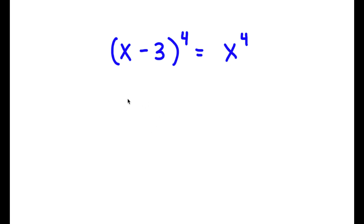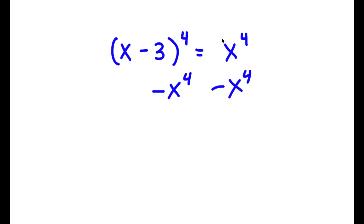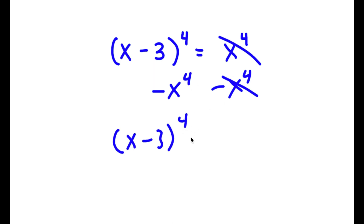In this problem, I have (x minus 3) to the power of 4 is equal to x to the power of 4. The first thing I'm going to do is subtract x to the power of 4 on both sides. So these two cancel out, and now I have (x minus 3) to the power of 4 minus x to the power of 4 is equal to 0.